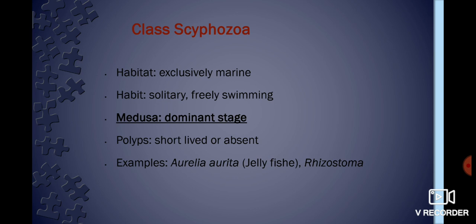The second class is Scyphozoa. Scyphozoa are exclusively marine organisms. They are solitary, and some of them are freely swimming. In them, the medusa is the dominant stage and is large, bell- or umbrella-shaped; the polyp stage is short-lived or may be absent. Mesoglea is present in them and is mostly cellular. Examples of Class Scyphozoa are Aurelia (also called jellyfish) and Rhizostoma.